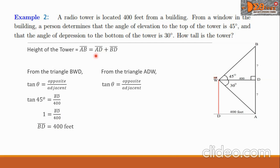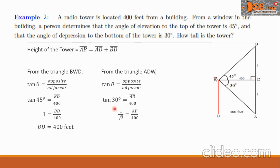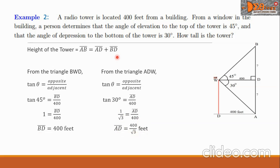Now let us compute for the length AD using triangle ADW. AD corresponds to the opposite side of the 30-degree angle, and 400 is the adjacent side. Substituting values using the tangent relation: tangent 30 degrees equals 1 over √3, equals AD over 400. Cross-multiplying, AD equals 400 over √3 feet. We now have the values AD and BD, and we will get their sum to find the final answer for AB, the height of the tower.